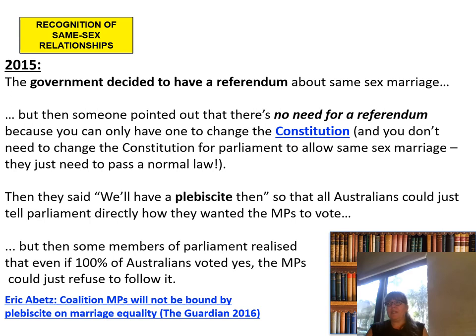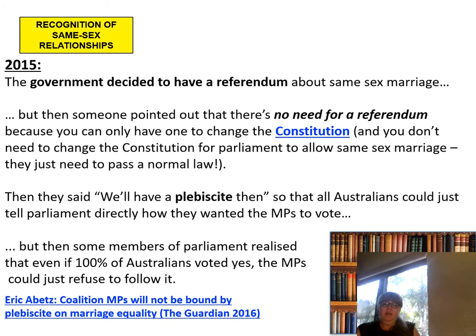A referendum result is binding — for example, on whether Aboriginal people should be recognised as citizens of Australia, whatever the votes came in, that was the decision and the law would be changed. With a plebiscite, all the votes come in saying yes, but an MP can still say, 'I'm the member for Tarbuck Bay and I reckon that's rubbish, so I'm going to vote no anyway.' A plebiscite has no real power.